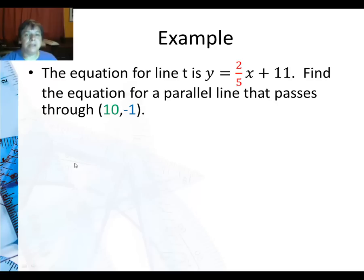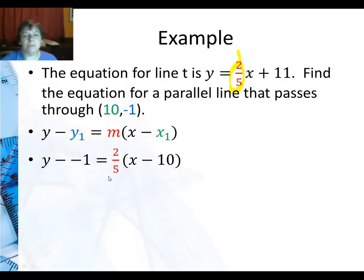So in this example, I want to find the equation for line T is y equals two-fifths x plus eleven. And I want a parallel line that passes through this point. It's really extremely straightforward because I'm using the same slope, two-fifths, and just my new point, ten negative one. I do a substitution.